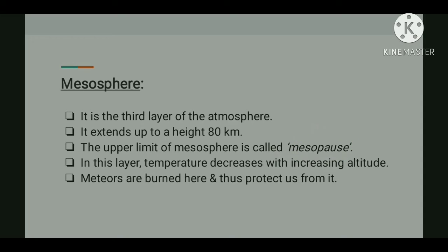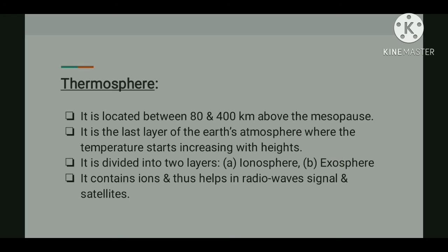Above the mesopause, temperature increases with increasing height — this layer is called the thermosphere, located between 80 to 640 kilometers. The thermosphere is divided into two layers: the ionosphere and the exosphere. The ionosphere contains ions and thus helps in the transmission of radio waves and satellites.